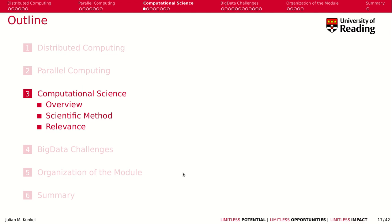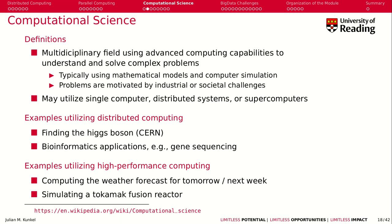Let's talk about computational science. What is computational science? It's a multidisciplinary field using advanced computation capabilities to understand and solve complex problems. For example, finding the Higgs boson, bioinformatic applications like gene sequencing, computing weather forecasts for tomorrow or next week, or simulating the tokamak fusion reactor.